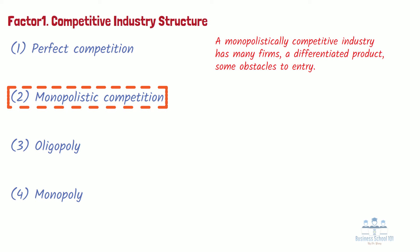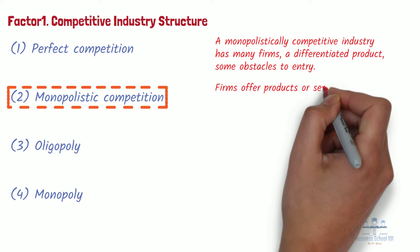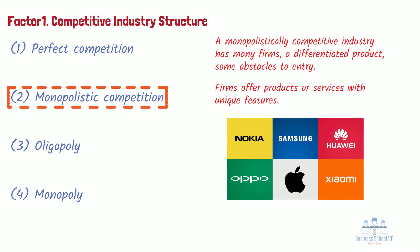The key to understanding this industry structure is that the firms now offer products or services with unique features. The global smartphone industry provides one example of monopolistic competition. Many firms compete in this industry, and even the largest of them, such as Samsung, Apple, Xiaomi, Huawei, or Vivo, have less than 20% market share.